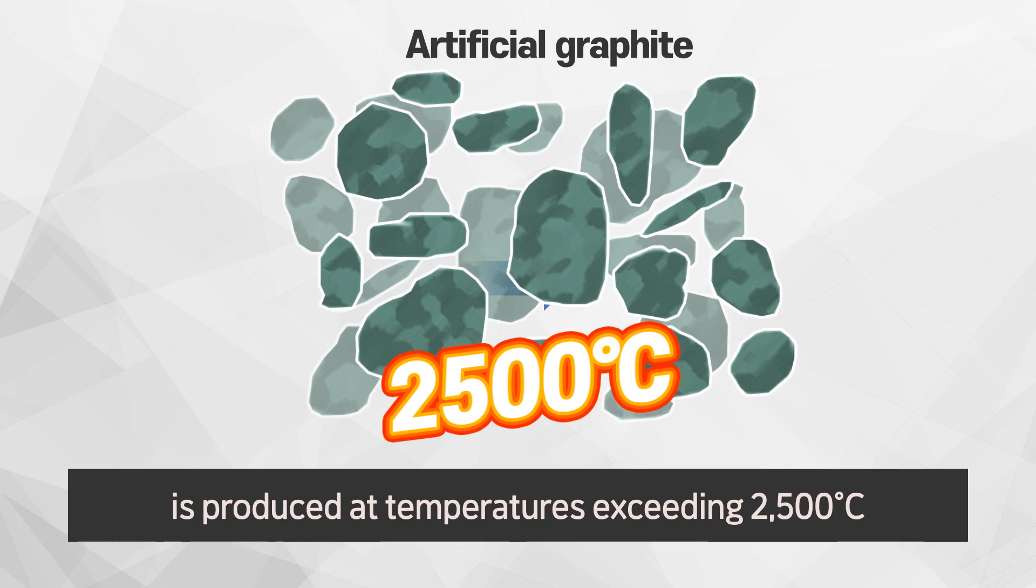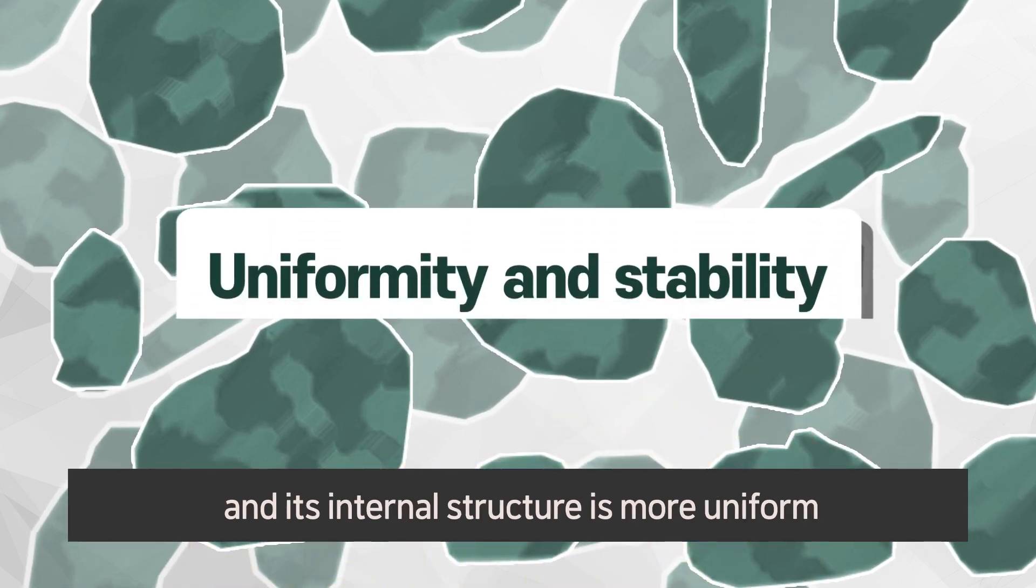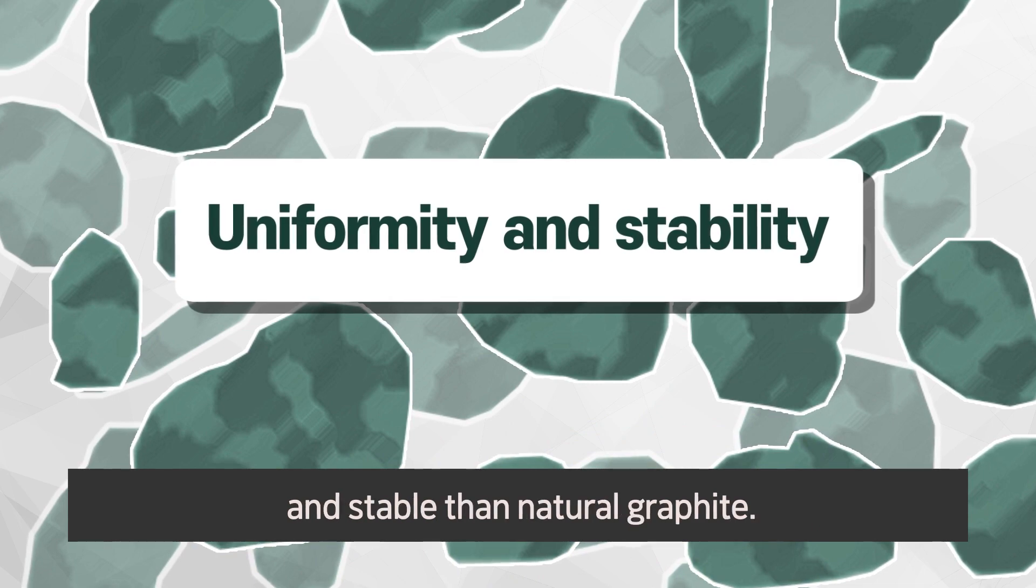Artificial graphite is produced at temperatures exceeding 2,500 degrees Celsius, and its internal structure is more uniform and stable than natural graphite.